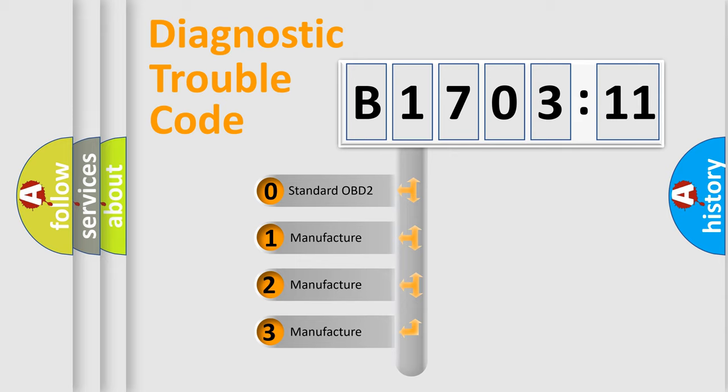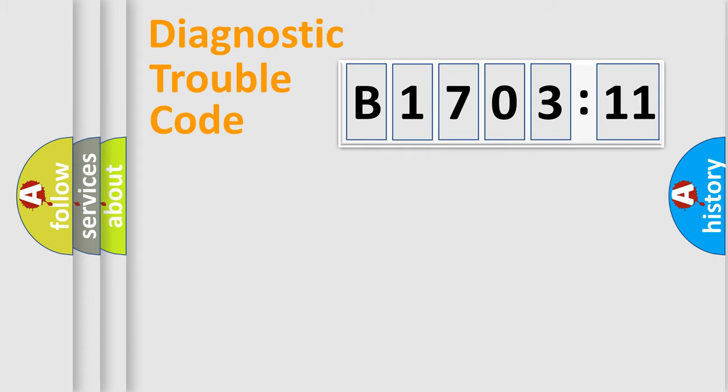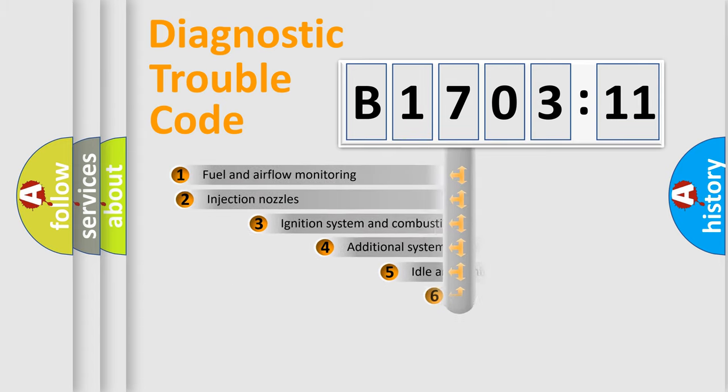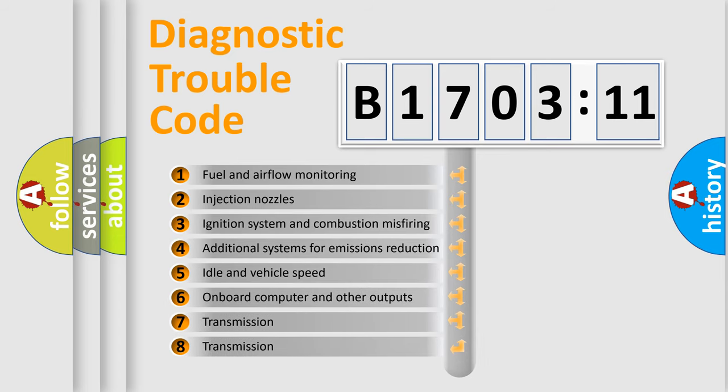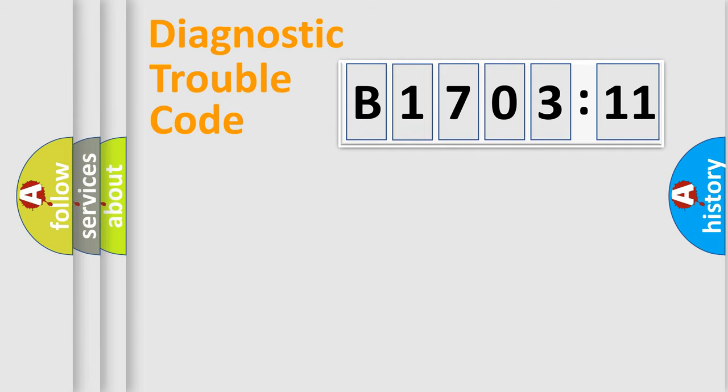If the second character is expressed as zero, it is a standardized error. In the case of numbers 1, 2, or 3, it is a more prestigious expression of the car-specific error. The third character specifies a subset of errors. The distribution shown is valid only for the standardized DTC code. Only the last two characters define the specific fault of the group.